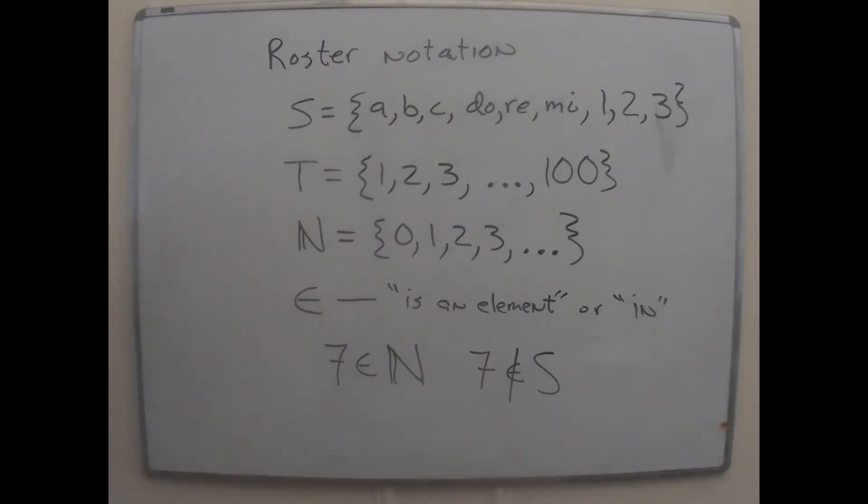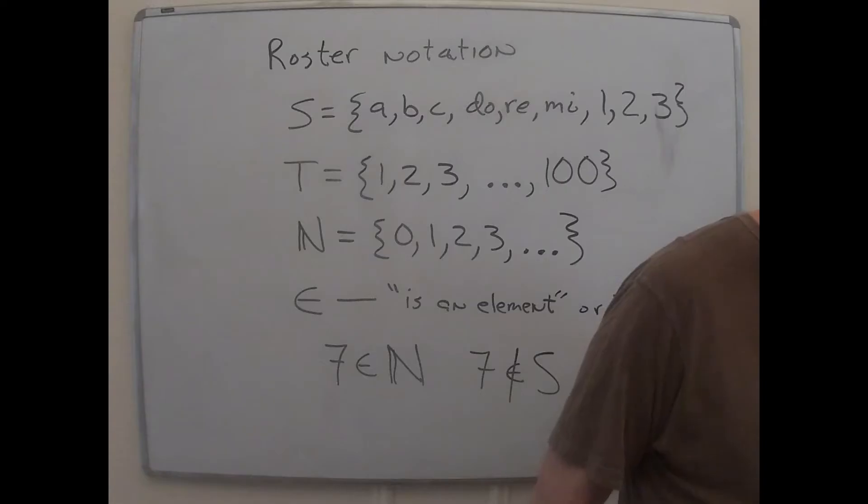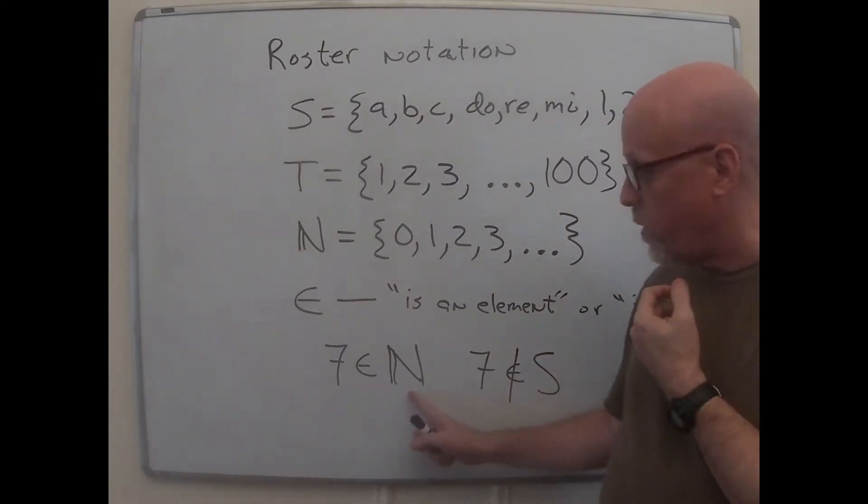Actually, seven is also in T, but it's not in S. So, I should show you how to say it's not in something while we're here. Seven. Write that same element sign, but put a dash for a diagonal line through it, a slash through it. Seven is not in S.